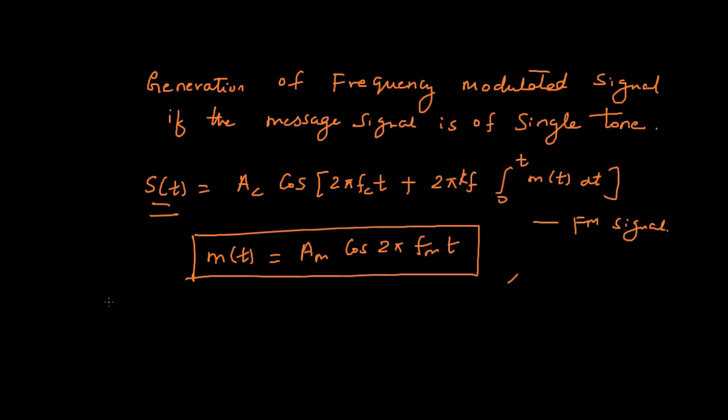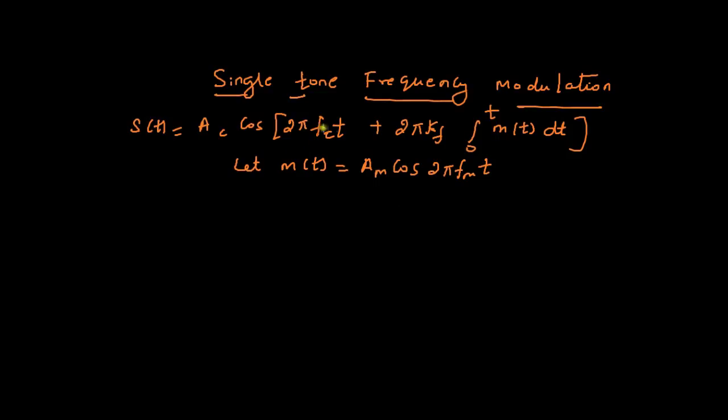Let us put m(t) = Am cos 2πfmt in this equation. We are not disturbing this part, it will be 2πfct and then 2πkf. Since amplitude will be constant, we will take this Am outside: 2πkf·Am∫₀ᵗ cos 2πfmt dt.